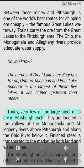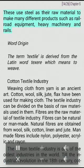Today, very few of the large steel mills are in Pittsburgh itself. They are located in the valleys of the Monongahela and Allegheny Rivers above Pittsburgh and along the Ohio River below it. Finished steel is transported to the market by both land and water routes. The Pittsburgh area has many factories other than steel mills, which use steel as raw material to make products such as railroad equipment, heavy machinery, and rails.